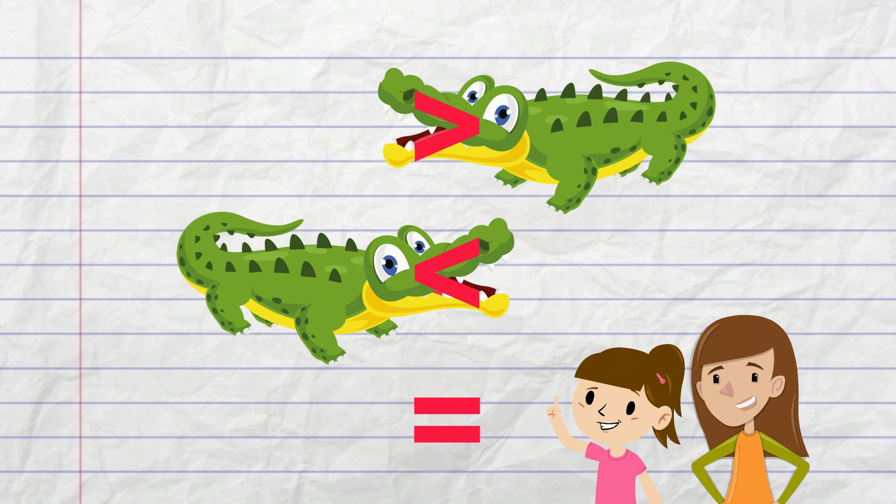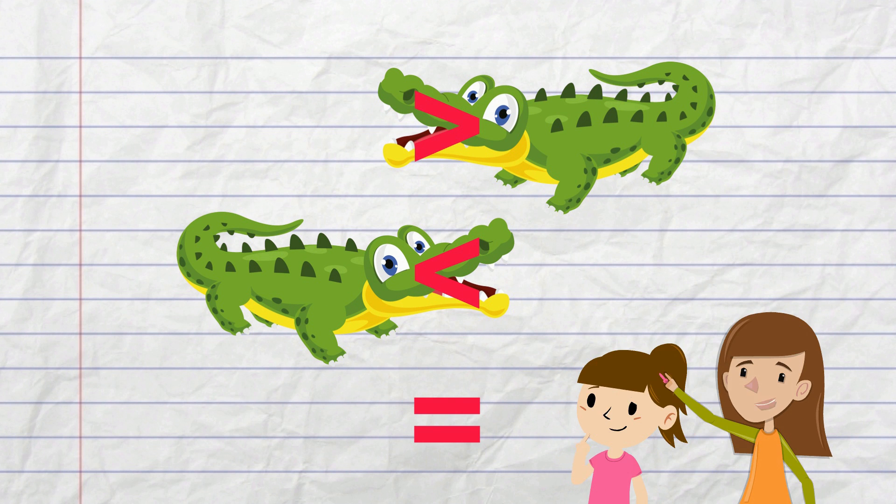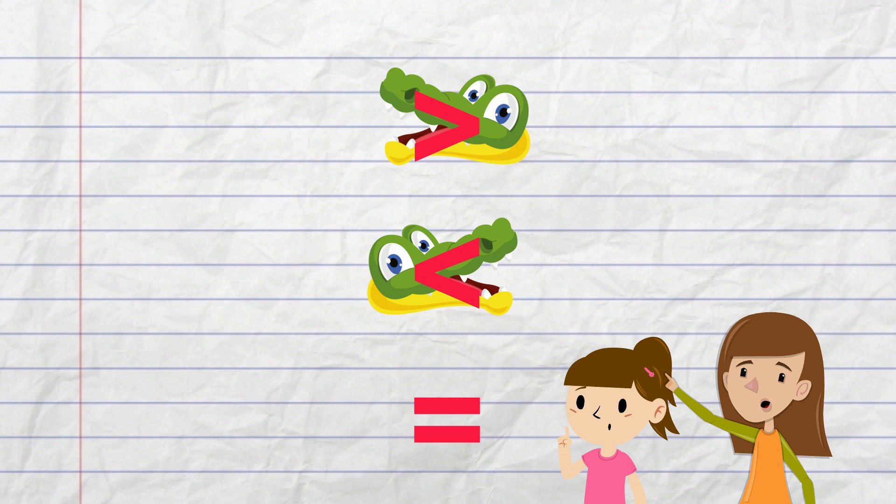Like me. I'm starving. Exactly. If you're starving, you will want to eat the most food, so the open alligator mouth will always be open to eat the greater number, and the small point will point toward the smaller number.